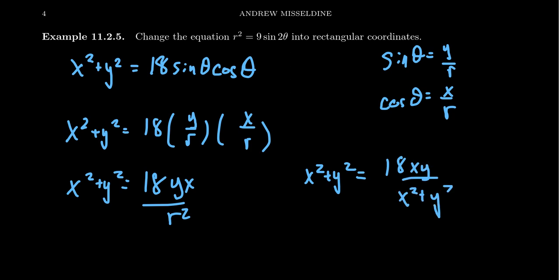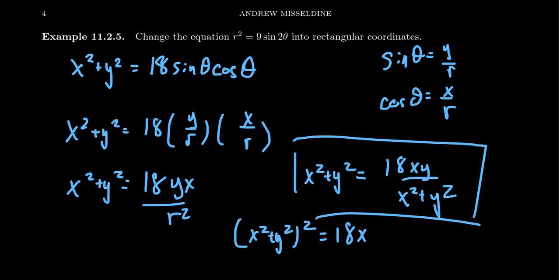This would then be the Cartesian equation we're looking for, much more complicated than the polar form. You could also clear the denominators. If you've done this a little bit differently, you could have had the equation (x² + y²)² = 18xy. That would have also been an acceptable solution. What we've done is we switched from the polar equation to the rectangular equation.